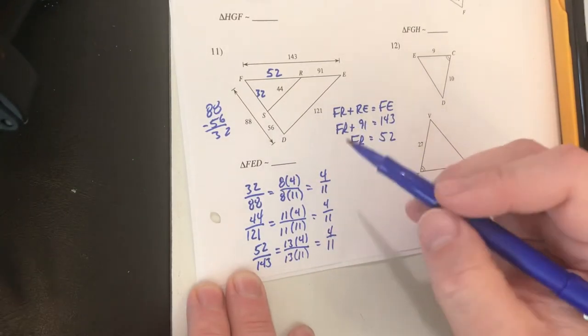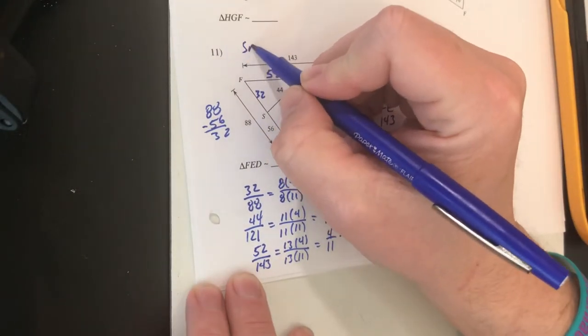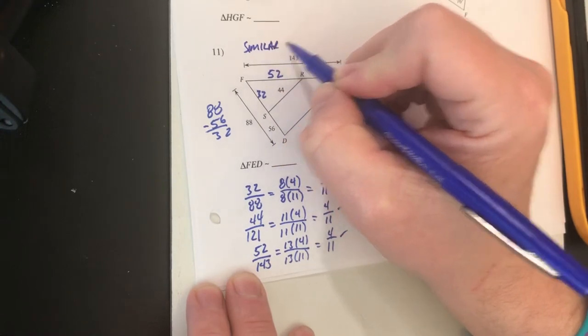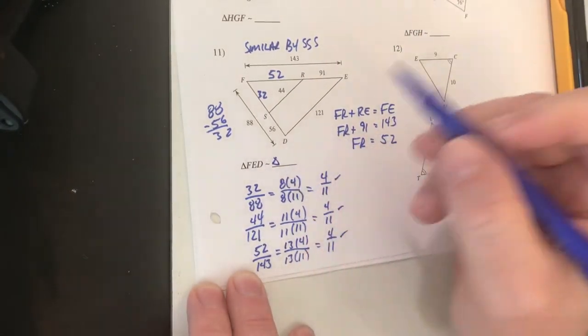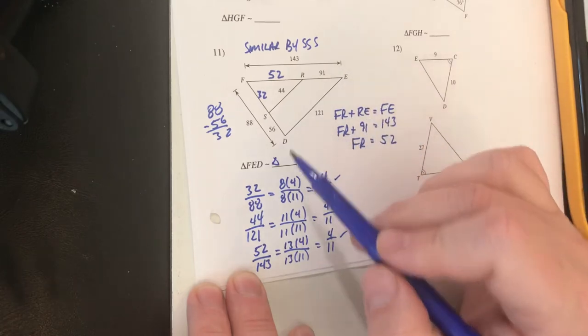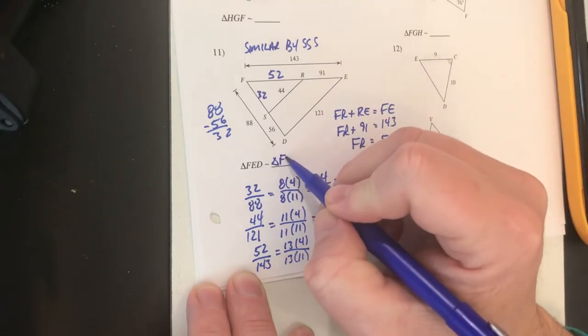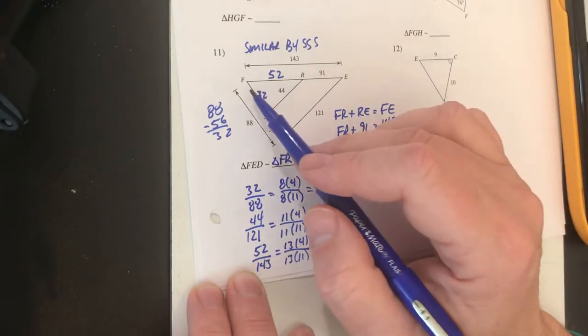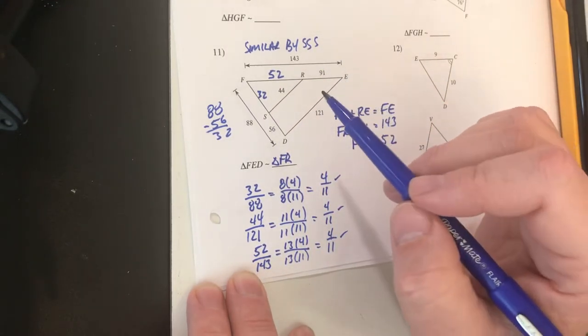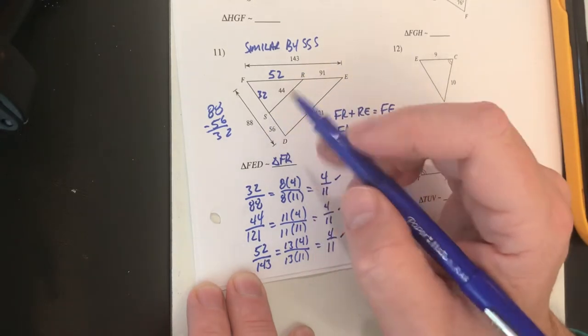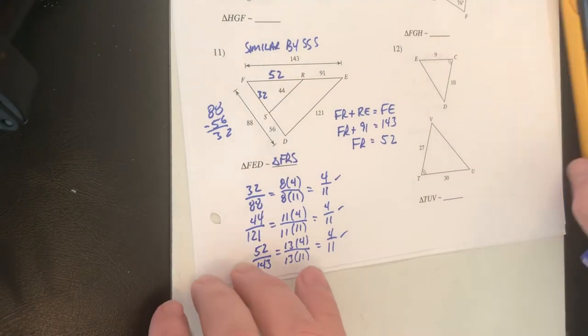So since all the ratios of all three corresponding pairs of sides are equal to the same value then I can say that these are similar side side side and the similarity statement I can complete that now triangle FED is similar to triangle FRS because FE and FR are related and corresponding. So that's how I would prove those two triangles similar.